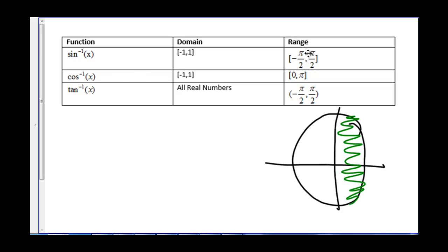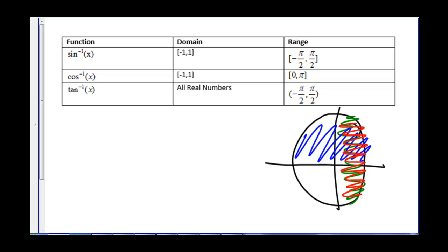For inverse cosine, we restrict the domain to negative 1 to 1, and the range is 0 to pi, which is the top half of the unit circle. For inverse tangent, the domain is all real numbers, and the range is negative pi over 2 to pi over 2.